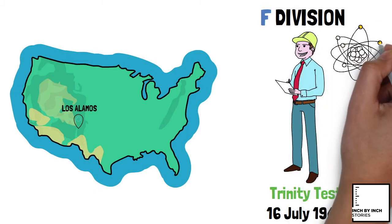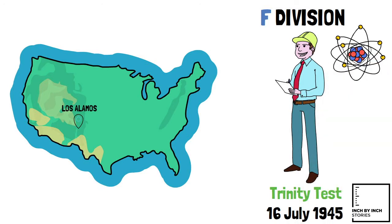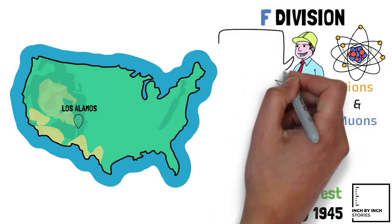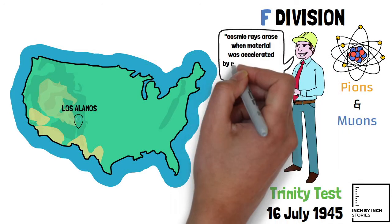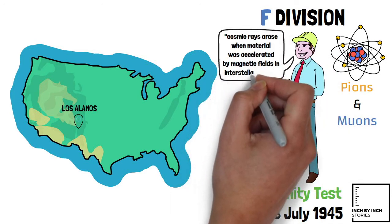Fermi did important work in particle physics, especially related to pions and muons, as he speculated the cosmic rays arose when material was accelerated by magnetic fields in interstellar space.